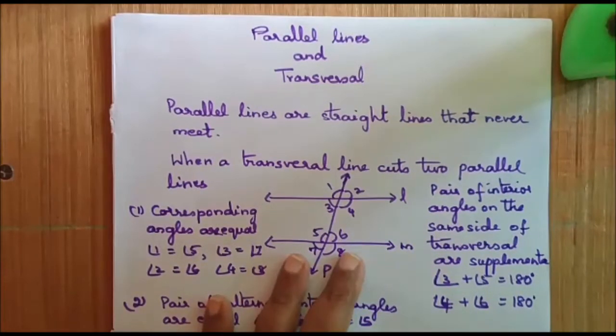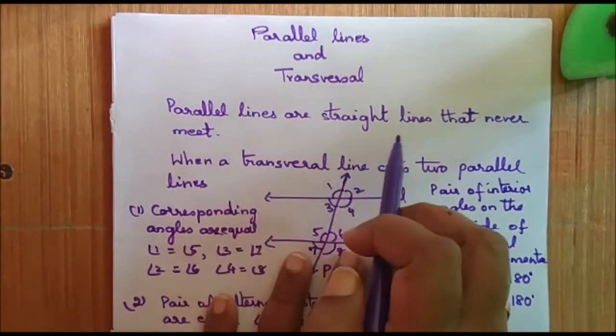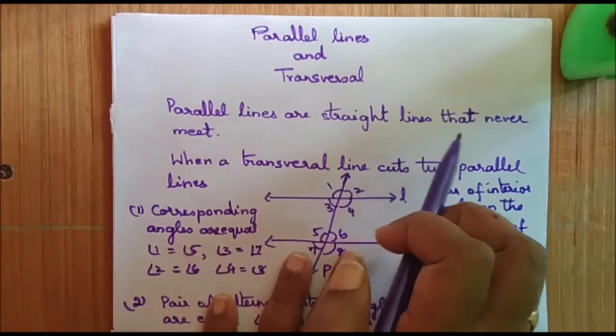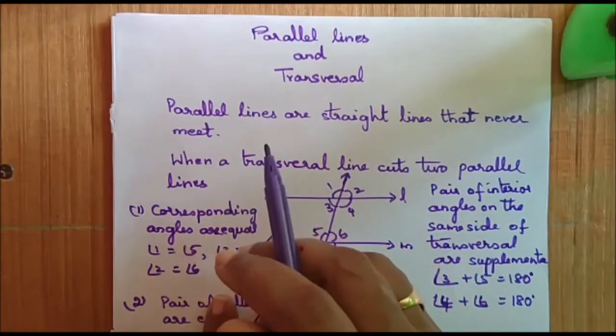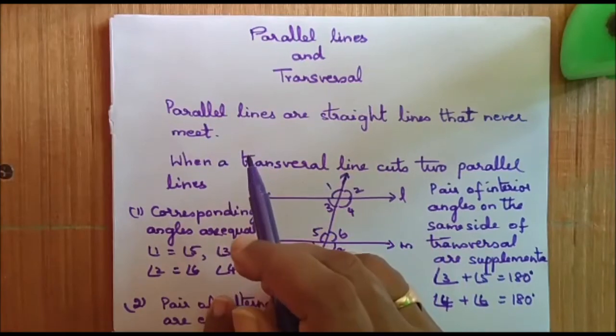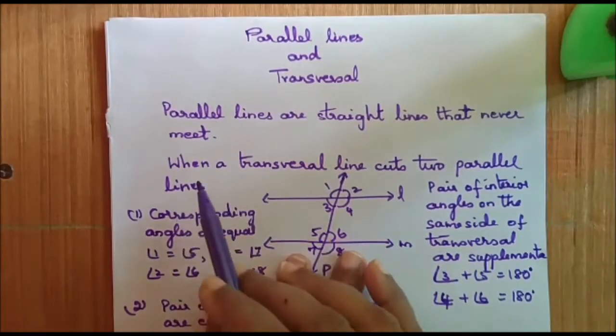Now, what are parallel lines? Parallel lines are straight lines that never meet. We would all know what is meant by parallel lines.